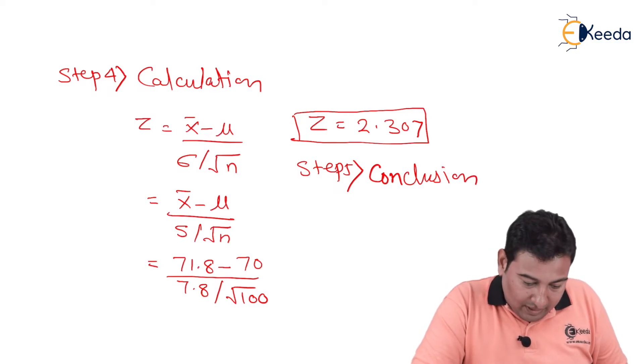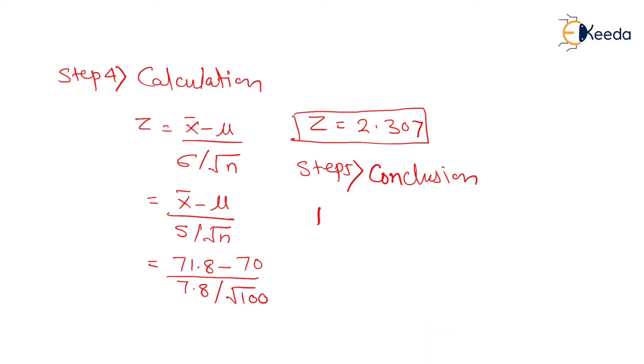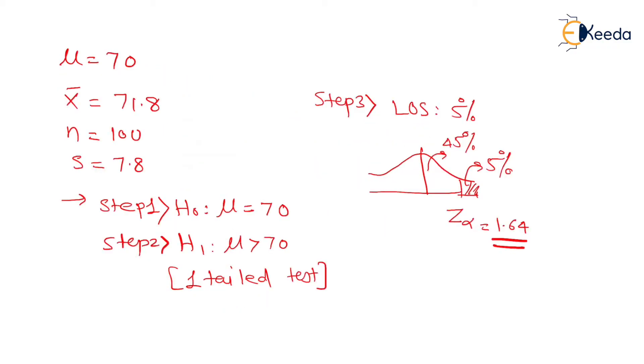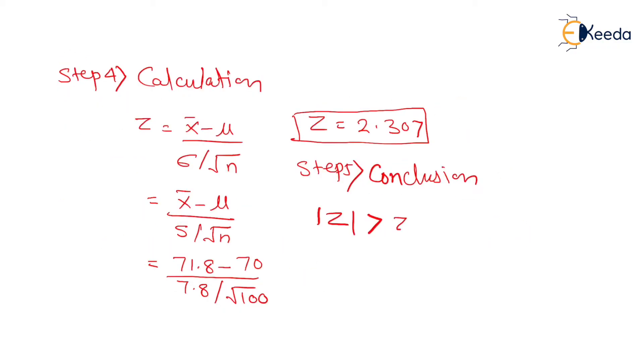In our problem, this |Z|, that is |2.307|, is obviously greater than Zα because Zα is 1.64. So it is greater than Zα, means reject NH and accept AH.